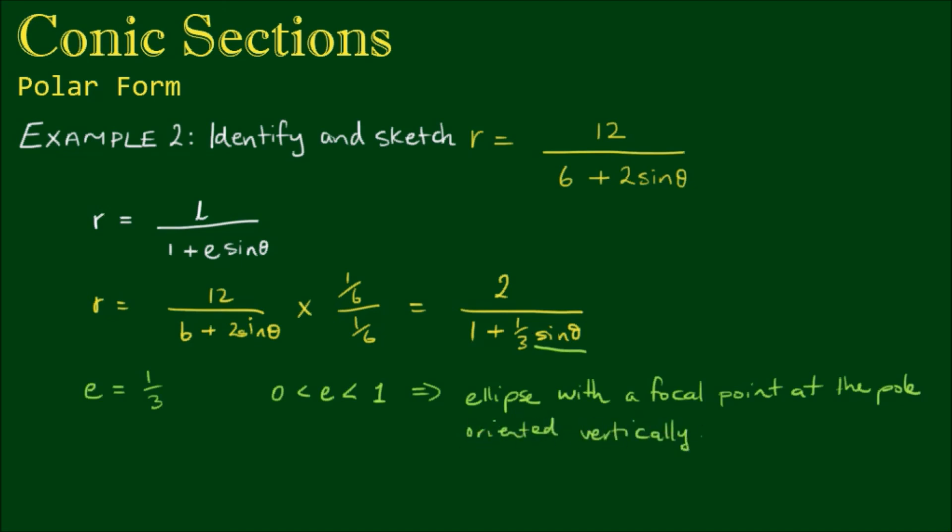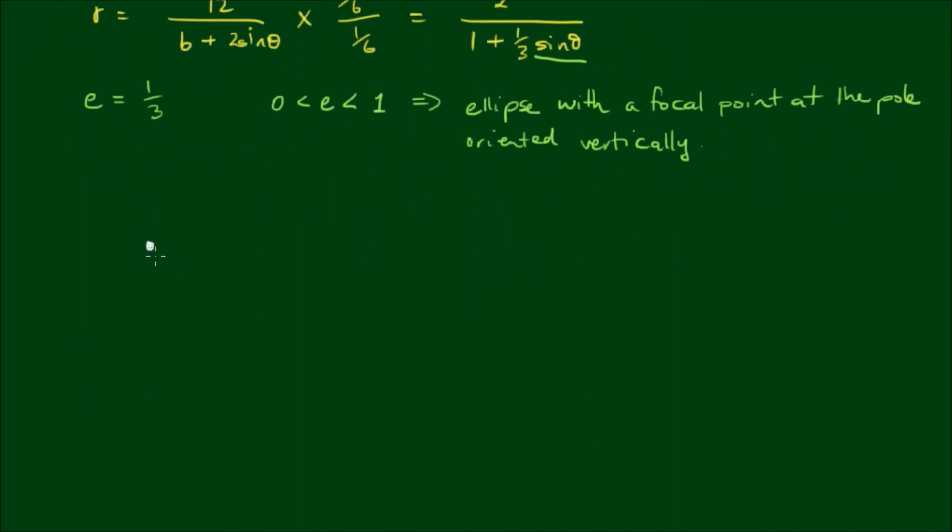Alright, so let's start to make a rough sketch of this. So we have a focus at the pole. The major axis of the ellipse is going to be in the vertical direction. So the minor axis is going to be in the horizontal direction. And we can just connect these points all together to form a rough ellipse. A very rough one in my case. Let's have a go at that again. That's a bit better.